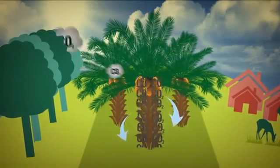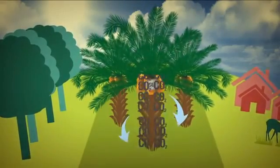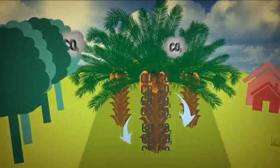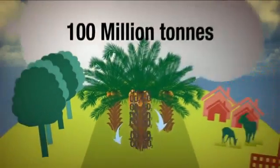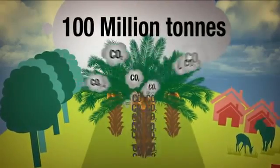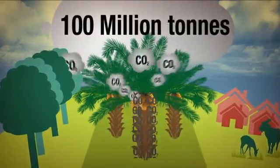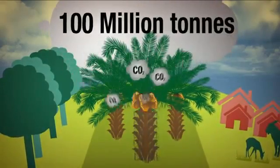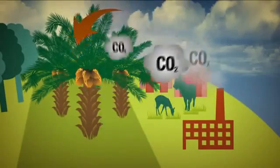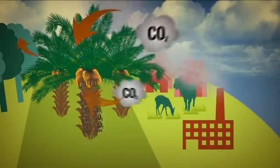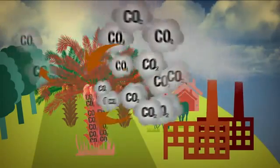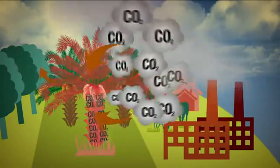They successfully removed all of their carbon emissions as well as carbon from land use change and other agricultural activities. Oil palm plantations alone could remove an incredible 100 million tons of carbon. Even with such high carbon removal capacity, forests and oil palm plantations could not remove carbon emissions entirely because of the growing energy sector.